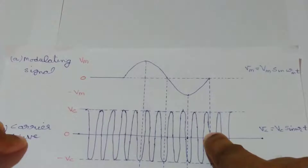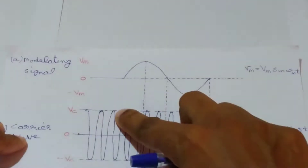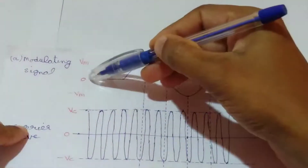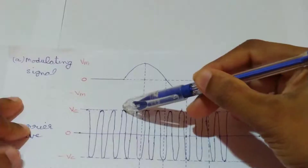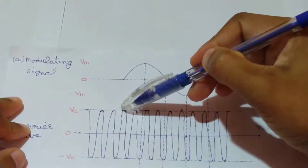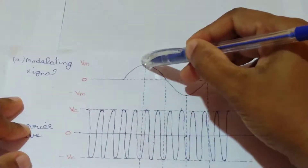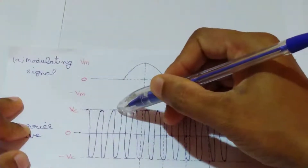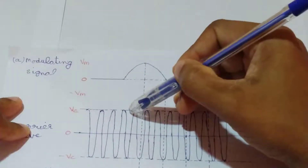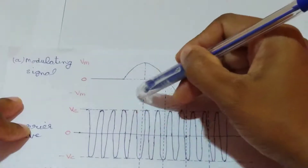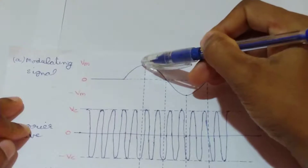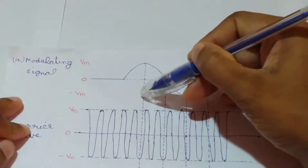The carrier signal is a high frequency signal with peak amplitude capital Vc. We can represent the carrier wave as: Vc = Vc sin(ωc·t), where capital Vc is the peak amplitude and ωc is the angular frequency. In amplitude modulation, we need to change the amplitude of this carrier wave in accordance with the instantaneous amplitude of the modulating signal. The zero level of the modulating signal is represented by the Vc amplitude level. When the modulating signal increases from zero, the amplitude also increases from Vc.